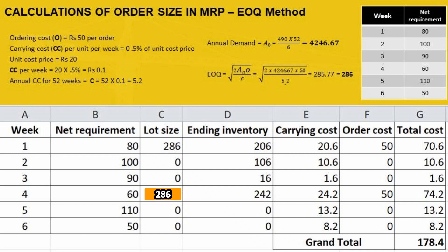We can now calculate the EOQ using the formula: square root of 2 × annual demand × ordering cost ÷ carrying cost. With annual demand of 4246.67 and the respective costs, the EOQ comes out to 285.77, which we round up to 286 units.